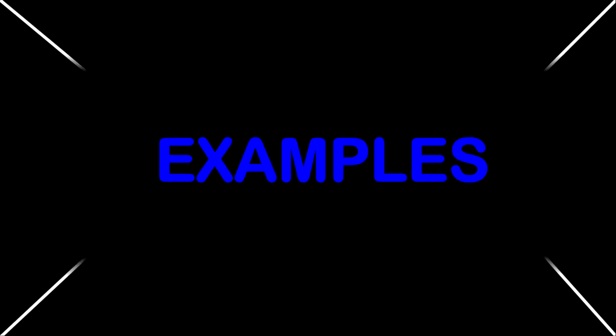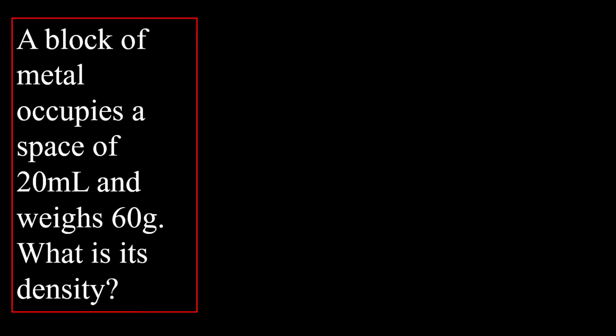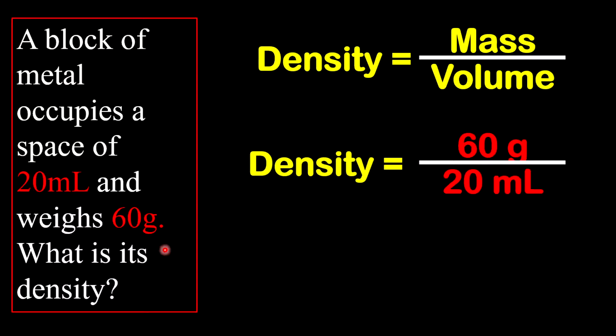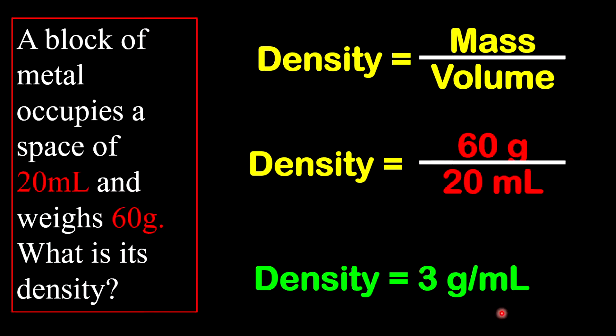Now time for some examples. Now let's look at three examples for density questions. Our first example states, a block of metal occupies a space of 20 milliliters and weighs 60 grams. What is its density? Now just remember that density is equal to mass over volume. Now let's look at what is given inside of the question to determine what density is. So what is given? We have 20 ml, which is the volume, and also 60 grams, which is the mass. So therefore, density will be 60 grams over 20 ml. You'll get density is equal to 3 grams per milliliters.